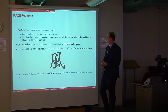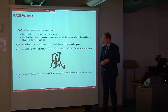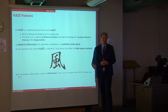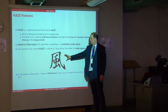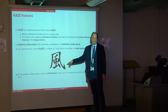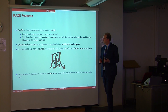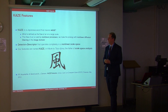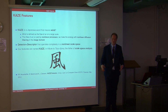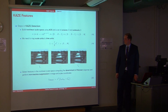Now let's talk about KAZE features. KAZE is a Japanese word meaning 'wind.' The analogy: wind is a flow of air at larger scale ruled by non-linear processes, similar to non-linear diffusion filtering in images. Also, the features are named KAZE as a tribute to Iijima, the father of scale space analysis. How does KAZE work?